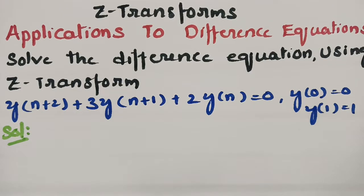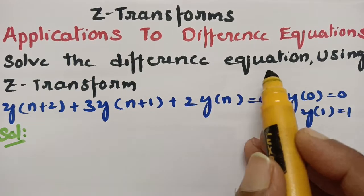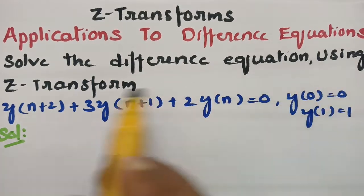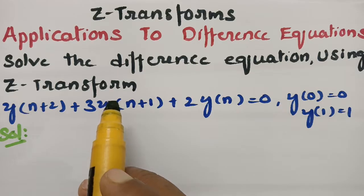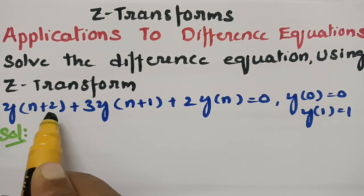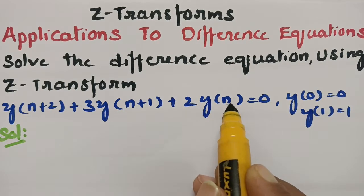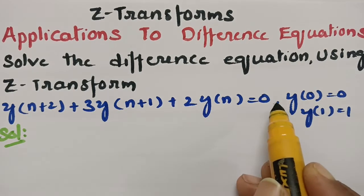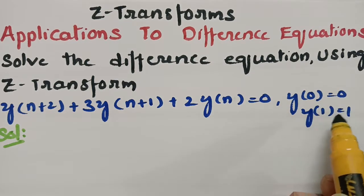Today's topic is application to difference equations. In this video we are going to solve the difference equation using Z-transforms. The problem is: y(n+2) + 3·y(n+1) + 2·y(n) = 0, with the given conditions y(0) = 0 and y(1) = 1.